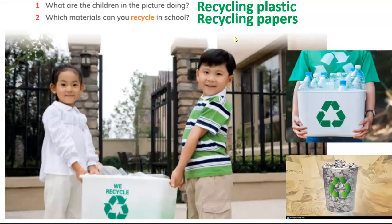What are the children in the picture doing? Look at the kids — they are holding the bin. You can see the icon. These children are helping the environment: they are picking up plastic, papers, cartons, and metals. When they pick them up, they can be used again — you can make new papers, use plastic and bottles for making walls, or put flowers in them.